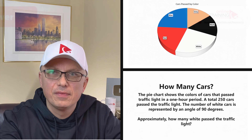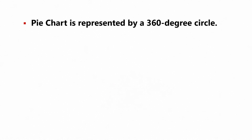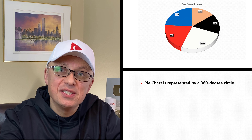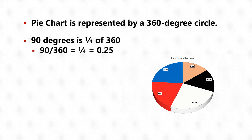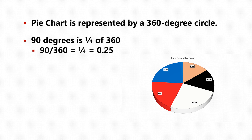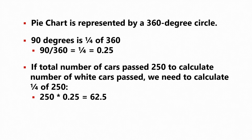A pie chart is represented by a 360-degree circle. We know the 90-degree angle represents the white cars, and 90 degrees is a quarter of 360. To do the calculation, divide 90 by 360, which gives 0.25. We then multiply the total 250 cars by 0.25, giving 62.5. The closest value among the answers is 63, so the correct choice is C.